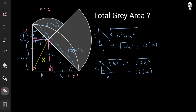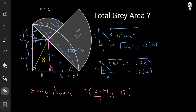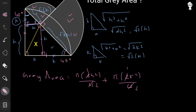√2 · h forms the radius of the first quarter circle and √2 · k forms the radius of the second quarter circle. The total gray area is the combined area of these two quarter circles. The area of a quarter circle is πr²/4, so: gray area = π(√2 · h)²/4 + π(√2 · k)²/4 = π(2h²)/4 + π(2k²)/4 = π/2 · (h² + k²).